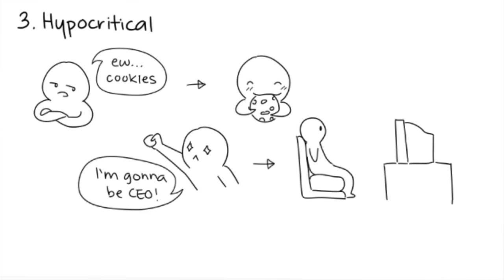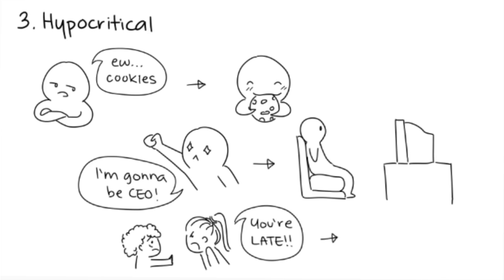This behavior can be confusing and disorienting, especially when they're being hypocritical. For example, they may tell you that they hate when you're late to dates because it shows that you have no respect for them.